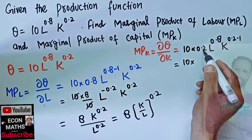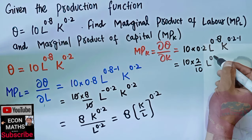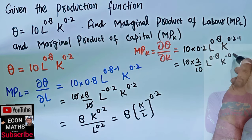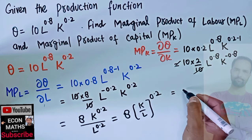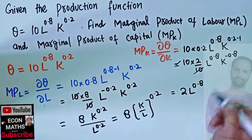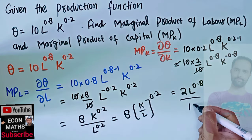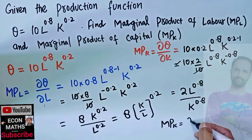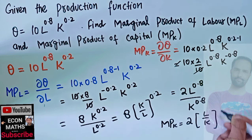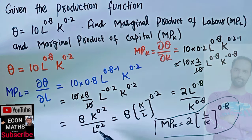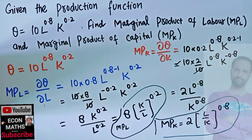10 × 0.2 can be written as 2/10, giving us (2/10) × L^0.8 × K^(−0.8). The 10s cancel, leaving 2 × L^0.8 × K^(−0.8). Transposing K^(−0.8) to the denominator, the exponent sign becomes positive, so the marginal product of capital = 2L / K^0.8. That is the marginal product of capital, and the marginal product of labor is 8K / L^0.2.